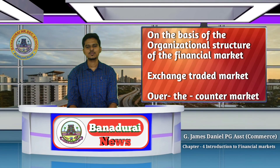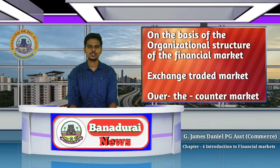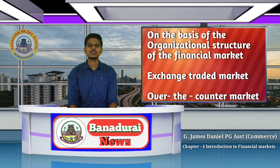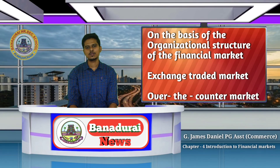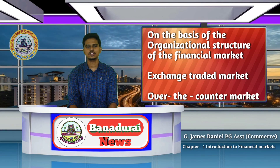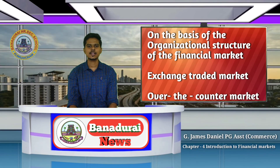The structure of the financial market includes two types: the exchange traded market, which is the stock exchange, and the over-the-counter market. In the stock exchange, trading is regulated. The over-the-counter market is how we trade outside the stock exchange — this is considered unauthorized. That is the structure of the financial market. In this class, we have covered the types of financial markets. In the next class, we will see another concept.